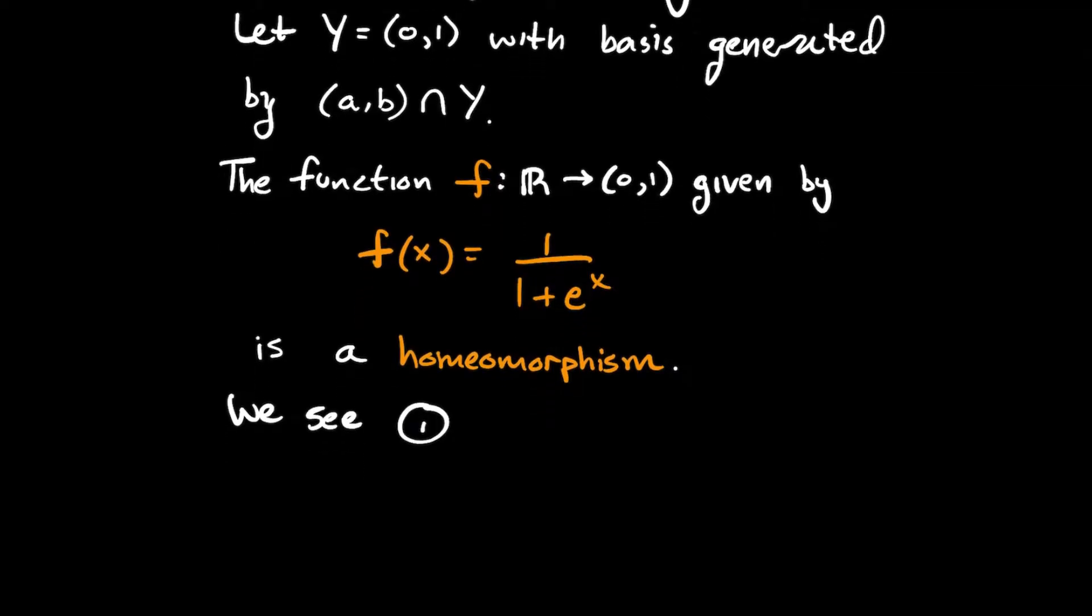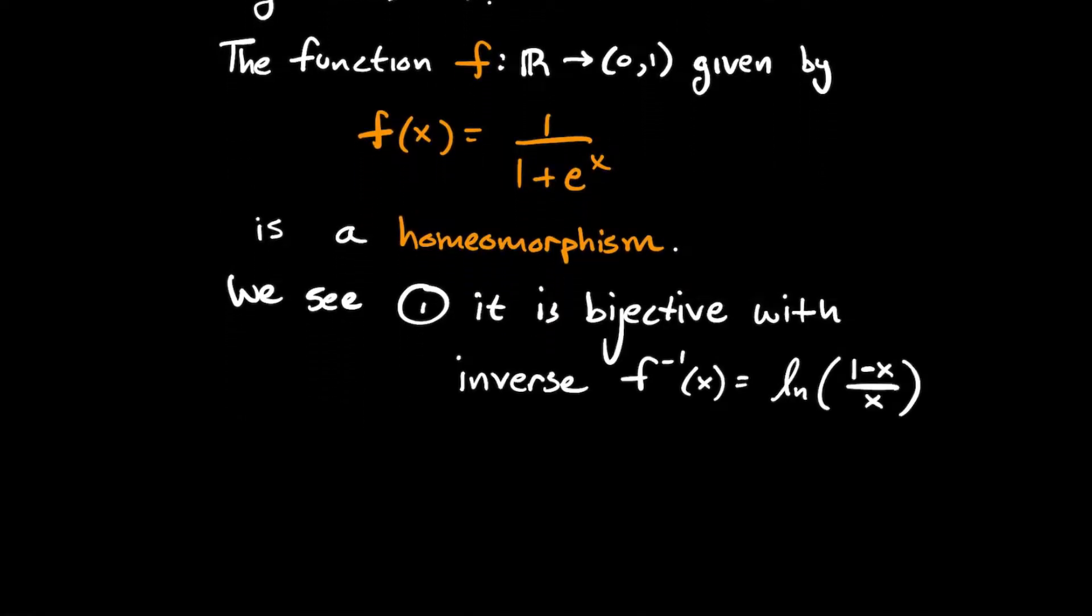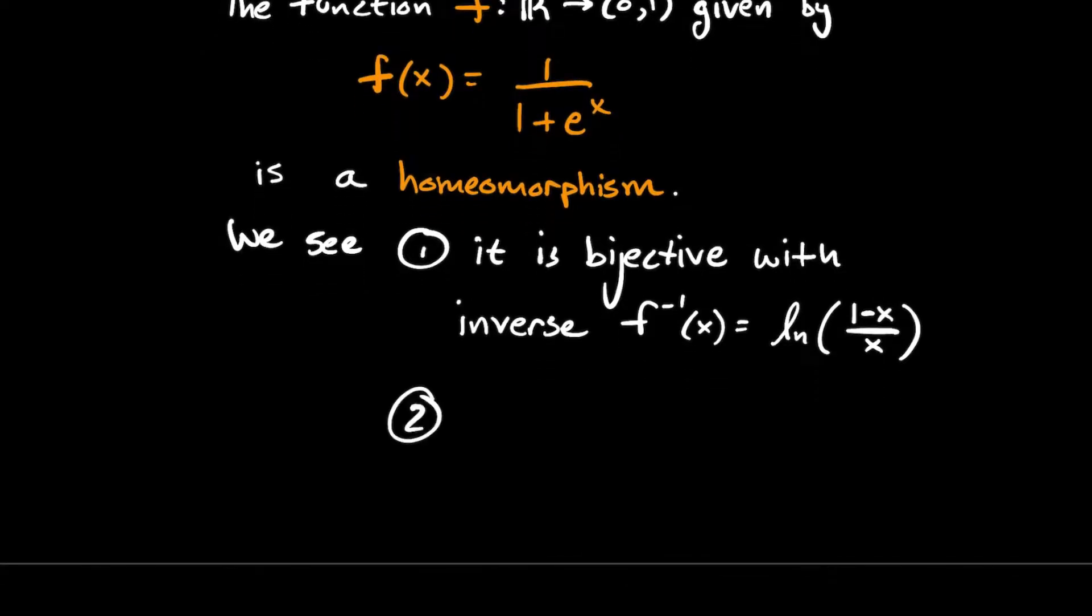So we see number 1, it's bijective because you can compute its inverse. Its inverse is natural log of 1 minus x over x. And number 2...